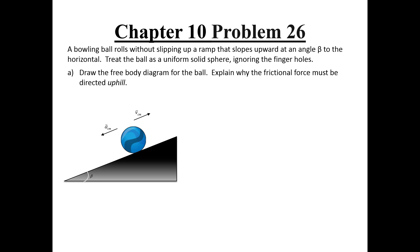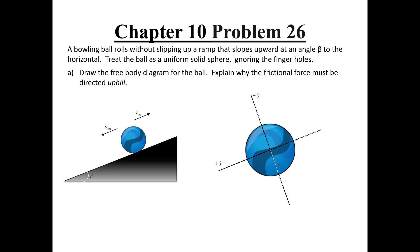Because we know that the linear acceleration in this scenario will be down the incline, we know that the ball is slowing down as it moves to the right. Now having a solid understanding of what is happening in the problem, let's start drawing our free body diagram. There are three forces acting on the ball. Two of those forces are acting on the center of mass — the normal force and gravity. Friction is acting on the part of the ball that is in contact with the surface of the incline.